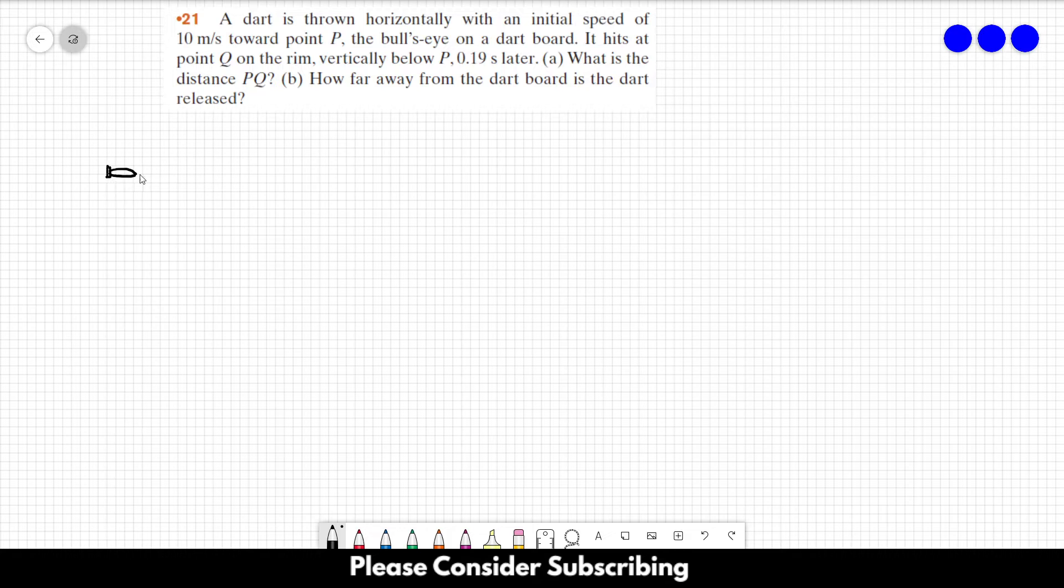So this is our dart and this is our board. So if we go horizontally, the dart would hit the bull's eye, which is point P.